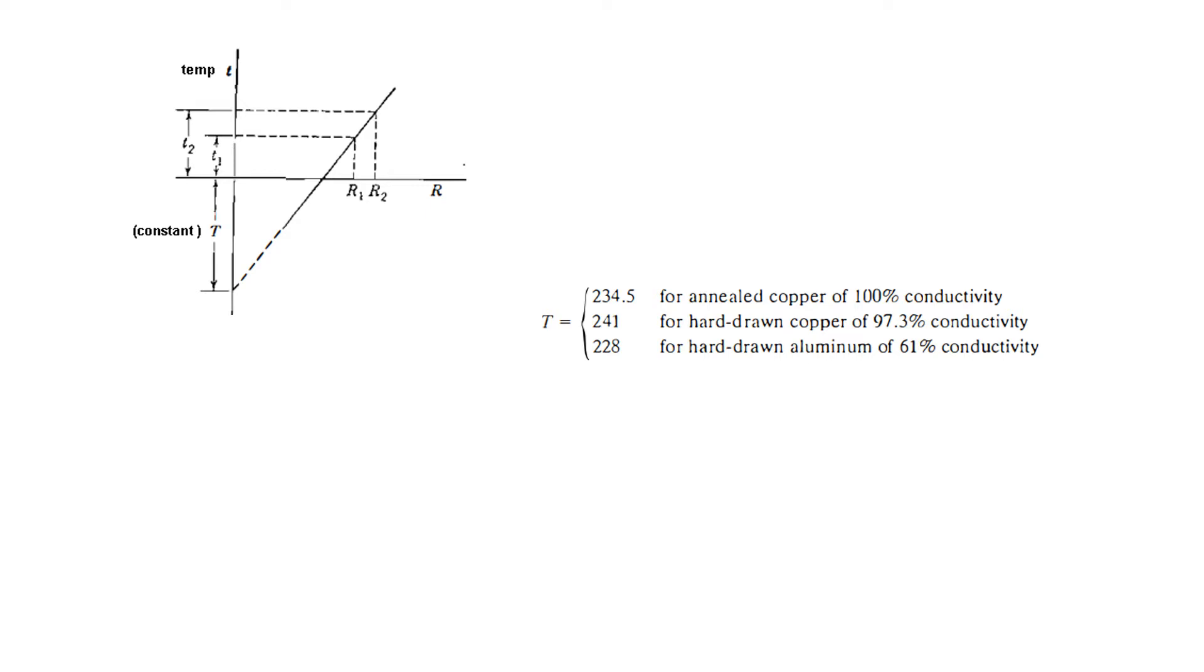The relation between increase in temperature and resistance is shown by this diagram. The easiest way is to keep this formula in mind: ΔR/R = ΔT/T. This capital T is fixed and for hard drawn aluminum it is 228, so in this example we will use 228.